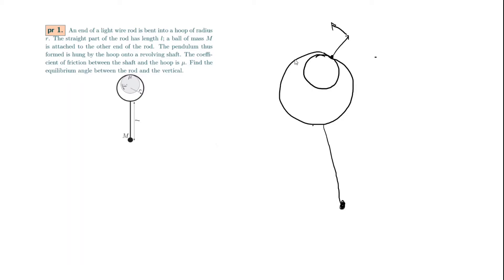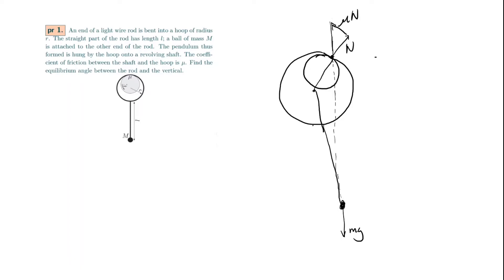This means the line of action of the gravitational force mg must contain the contact point, so it lies along the vertical through that point. The problem reduces to finding the angle between the rod and this vertical. With normal force N and friction force μN, the resultant force direction makes an angle of arctan(μ) with the vertical — found simply by vertical angles in the geometry.